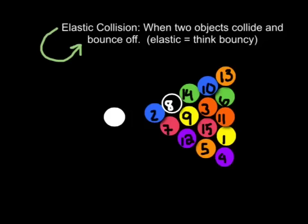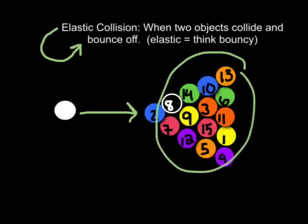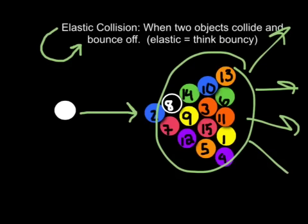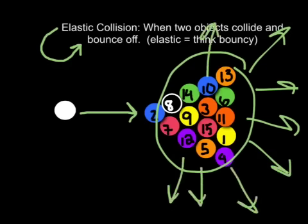So in a collision that's elastic, the objects collide and immediately bounce off of each other. This is kind of similar to this idea of billiard balls or pool balls. When you have one billiard ball go towards this whole group of them, it hits and then all of these go in different directions. They bounce off and they spread out throughout the entire billiard table.